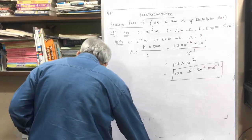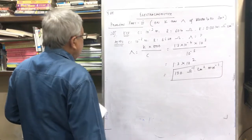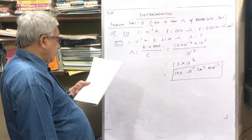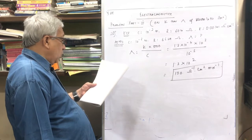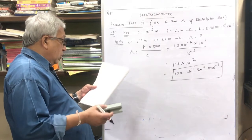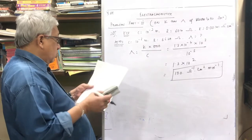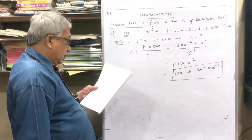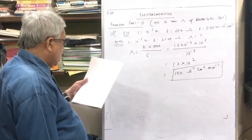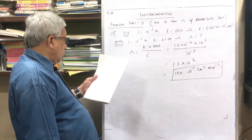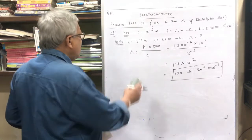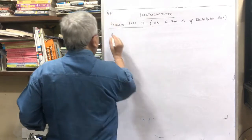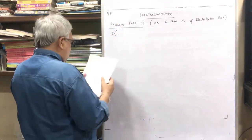Now let's go for problem 29. A conductivity cell filled with 0.1 molar KCl gives at 25°C a resistance of 85.5 ohm. The conductivity of 0.1 molar KCl at 25°C is given. The same cell filled with 0.005 molar HCl gives a resistance of 529 ohm. What is the molar conductivity of HCl solution? It is a similar problem. Let me go into problem number 29.